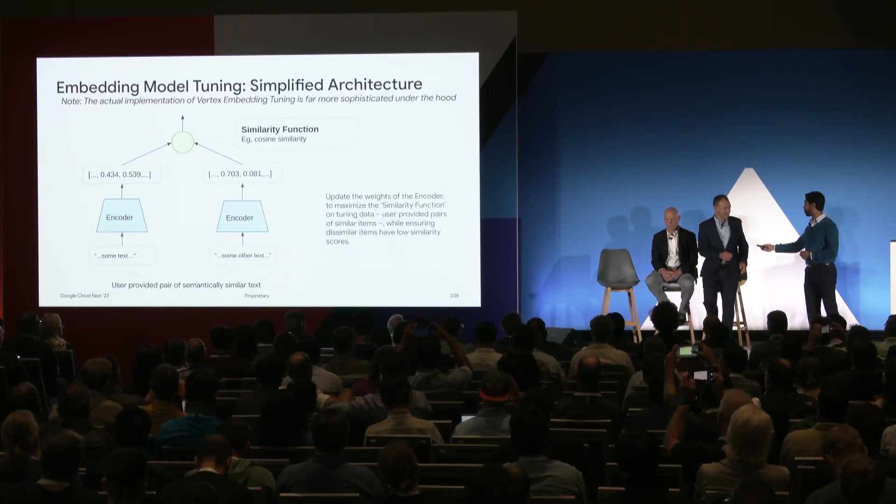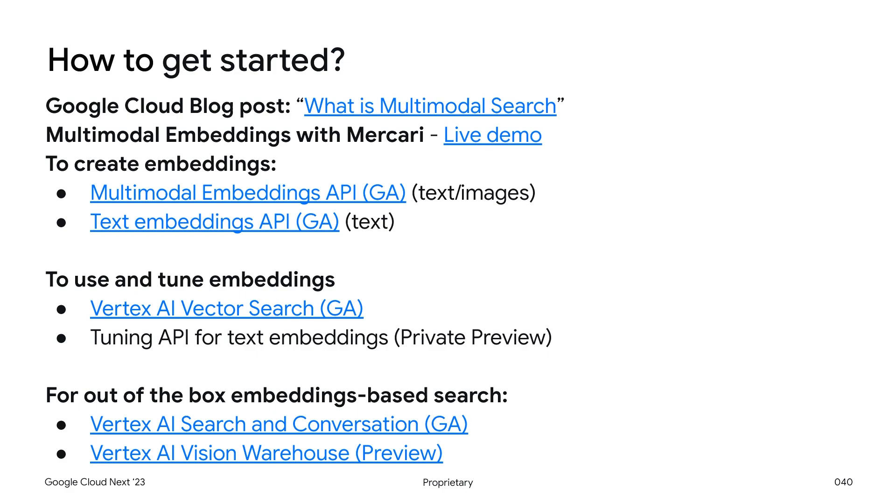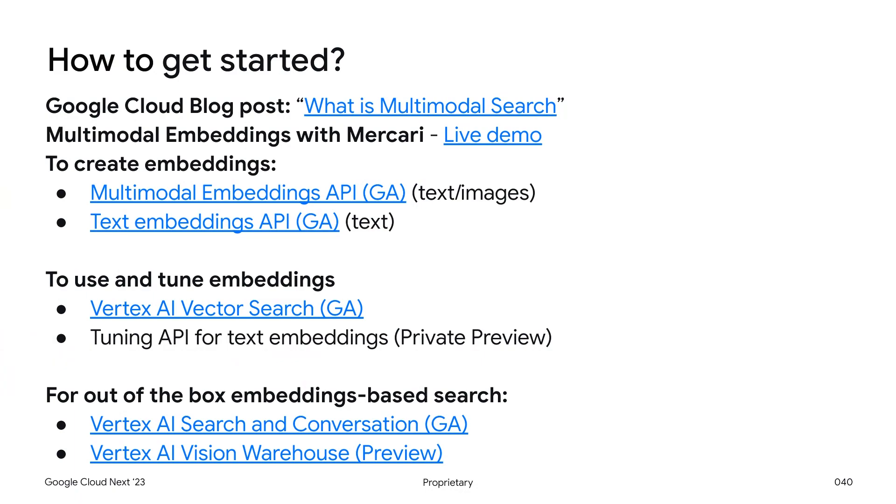Really cool stuff. We'd love for you to check it out. Here we're providing a few pointers to Google Cloud products to help you create, use, and tune embeddings. If you're looking for a more turnkey, out-of-the-box solution for an embeddings-based search product, you can check Vertex AI Vision Warehouse — a fully managed service for media content storage and search needs, such as videos and images — and Vertex AI Search to serve all your search needs with enterprise content such as web pages, PDFs, and more. For more information, you can always get in touch with us through your Google Cloud contact.